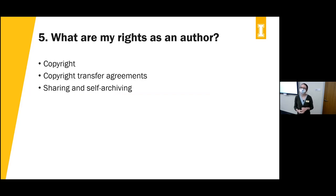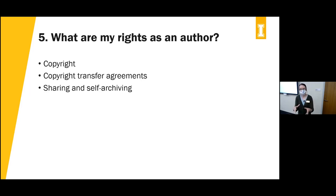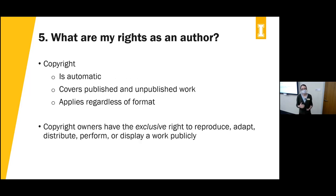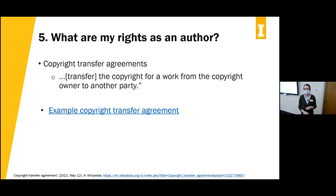Question five: what are my rights as an author? We'll talk about copyright, copyright transfer agreements, and sharing and self-archiving. Copyright is automatic — it covers your work whether you publish it or not, regardless of format. As the copyright owner, you have the exclusive right to reproduce, adapt, distribute, perform, or display a work publicly. However, when you publish in a journal, you often transfer that right to the journal and publisher through a copyright transfer agreement.